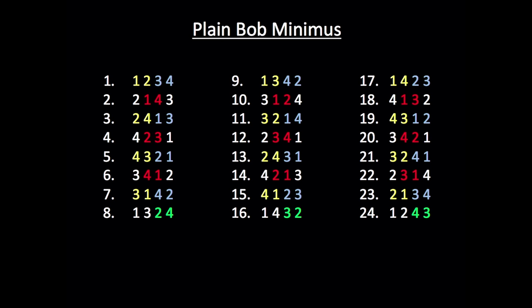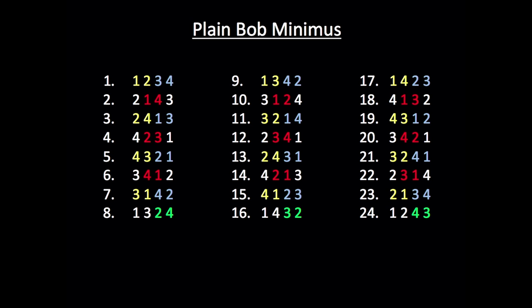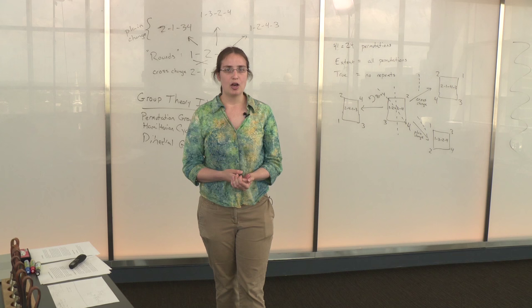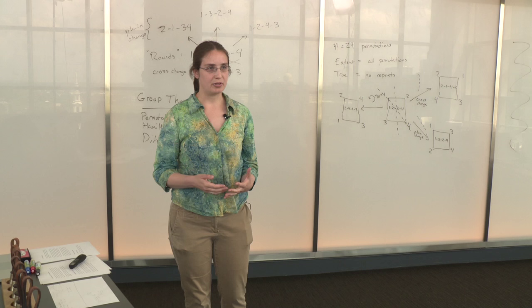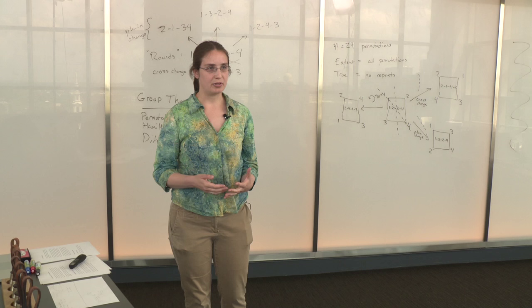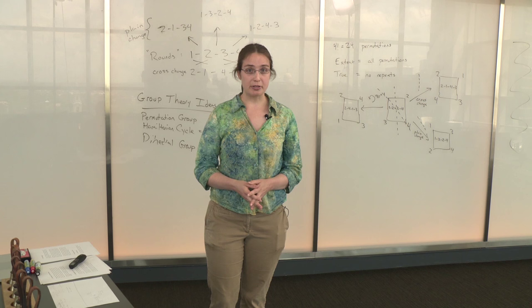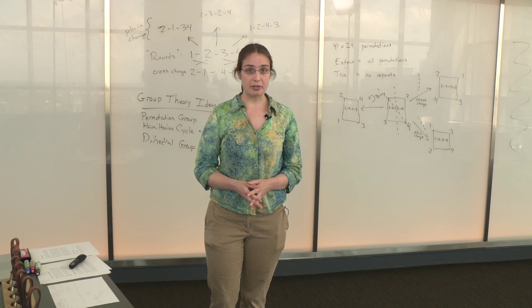I told you this was a Hamiltonian cycle. I told you that we didn't repeat any changes. Now with only 24 permutations to look at, it's pretty easy just to check that explicitly, to look at every change and compare it to every other and realize that we didn't repeat anything. But on more bells, with more possible permutations, there can be thousands of different changes that we ring in a composition. And you don't want to have to check every single one line by line. So the change ringers came up with some tricks in order to make it easier to check whether a composition was true, whether or not there were any repeats in a composition. And this hinges on essentially some group theory properties of the changes that we're ringing.